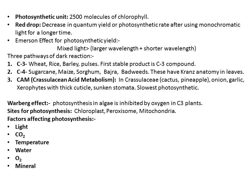The three pathways of dark reaction are C3, C4, and CAM. C3 pathway is also called the Calvin cycle, C4 is called the Hatch and Slack cycle, and CAM stands for Crassulacean Acid Metabolism. C3 plants include wheat, rice, barley, and pulses. The first stable product in C3 plants is a C3 compound — PGA (Phosphoglyceric Acid).